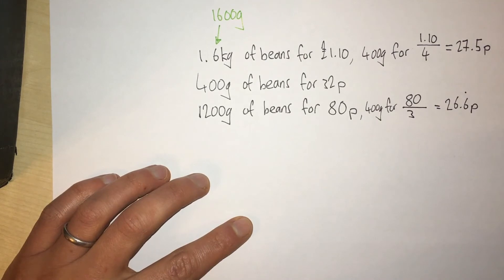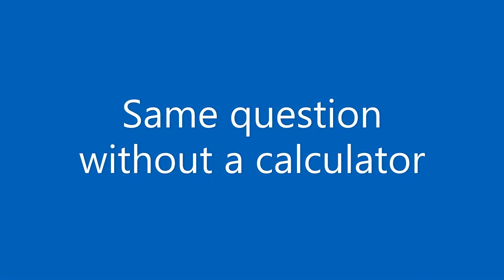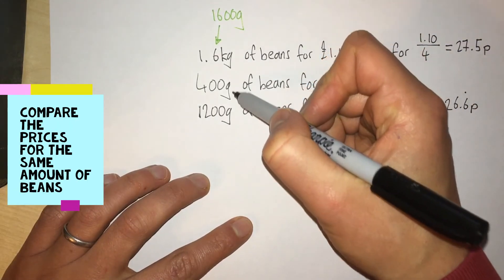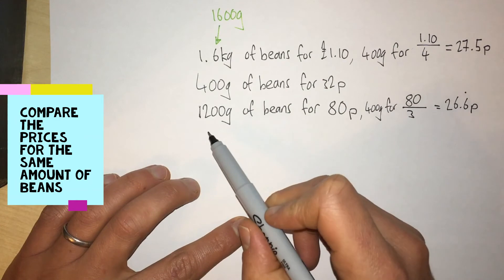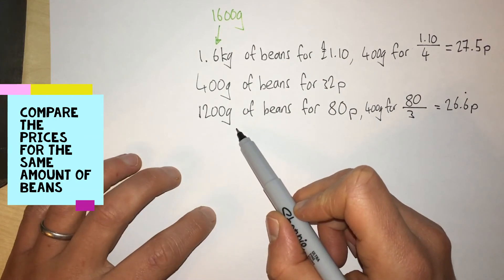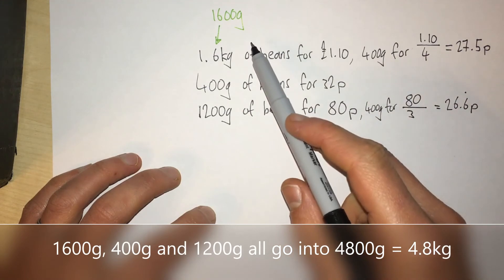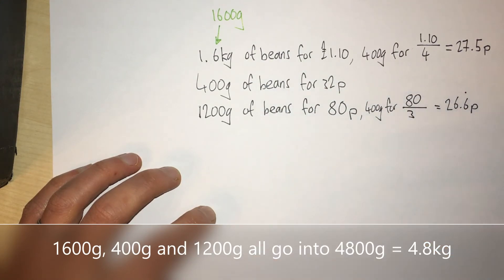What if I didn't have a calculator? There must be another way. Looking at these weights, I need to think of a number that they all go into. 1600, 400, and 1200 - they all go into 4800.